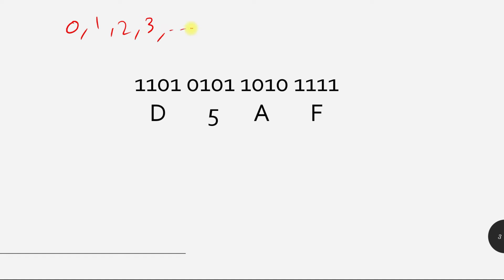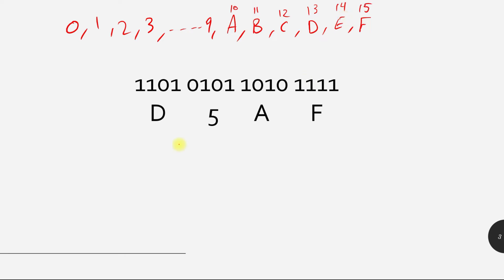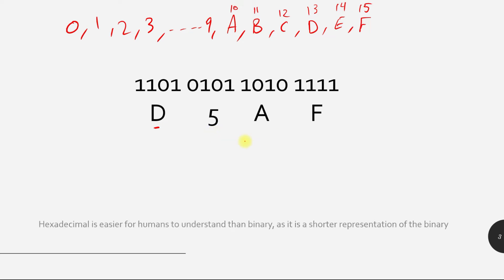As you can see on the screen, we have 16 binary digits. These 16 binary digits can be represented by only four hexadecimal values. The hexadecimal digits range from 0 to 9, then the letters A (representing 10), B (11), C (12), D (13), E (14), and F (representing 15). Four digits of binary code are represented by only one hexadecimal digit, which is easier for humans to understand, as it is a shorter representation of binary code.